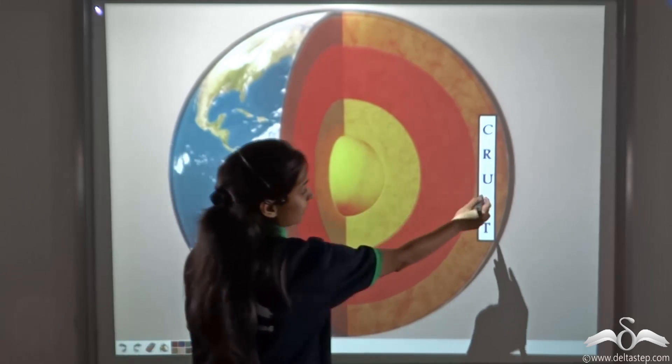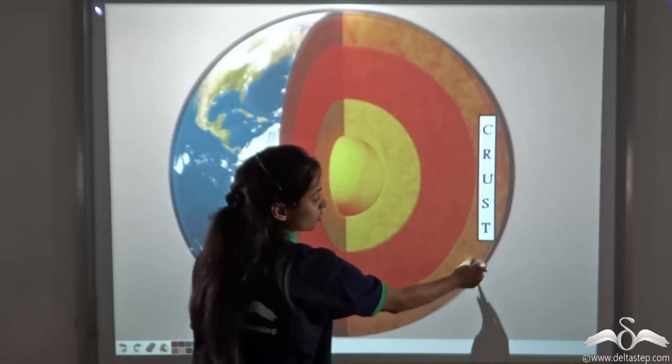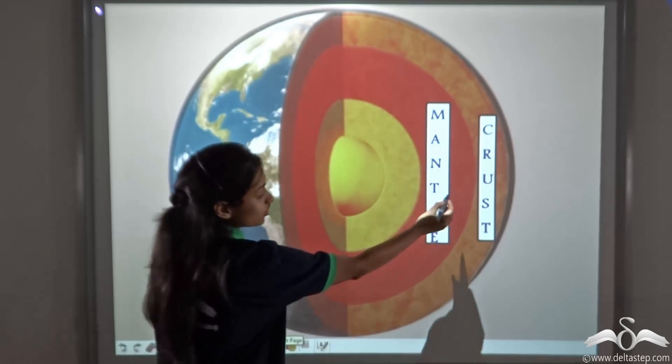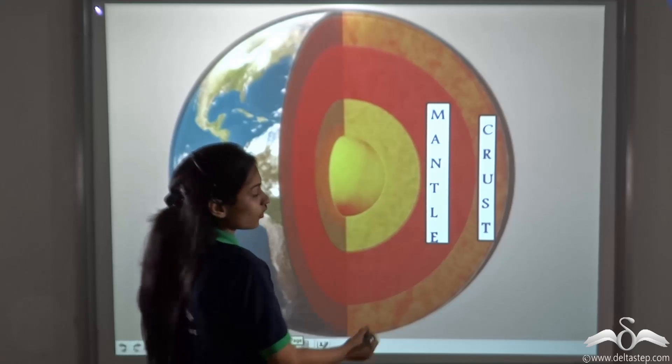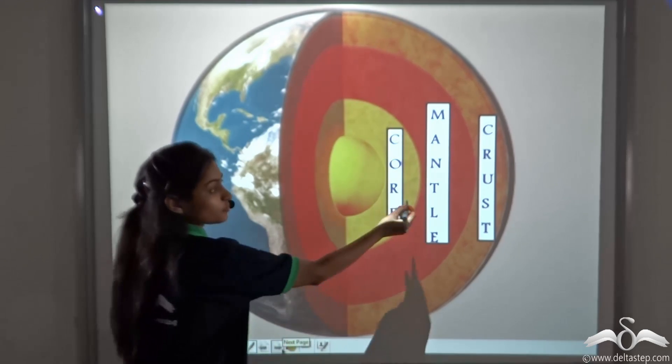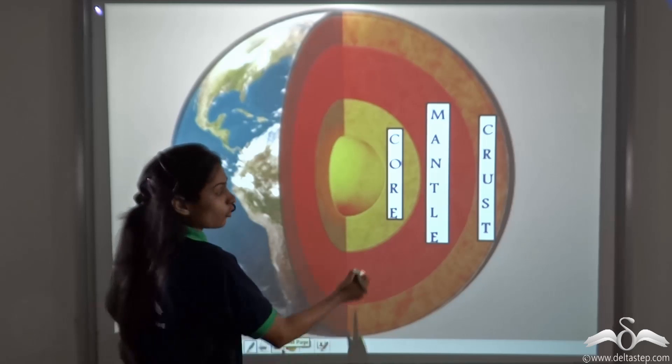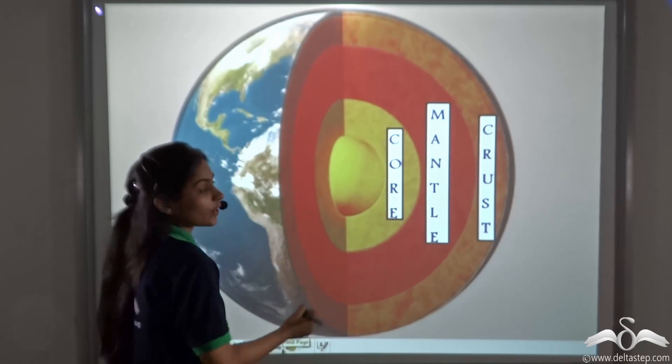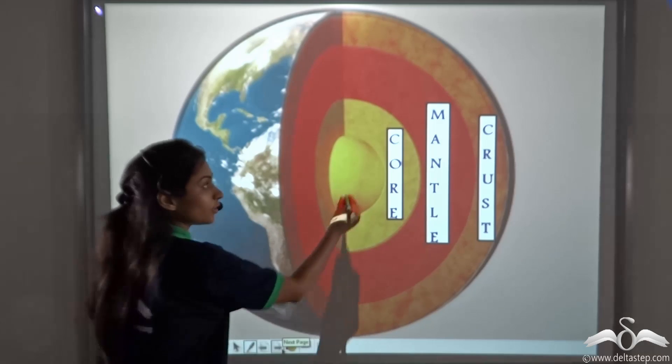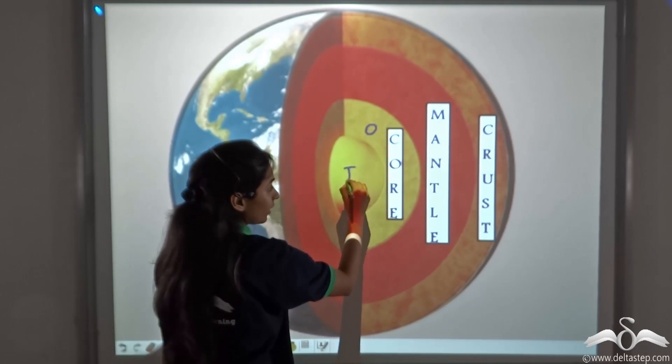Now the first layer, the outermost layer of the earth, is called the crust. Just below the crust, there is a layer called the mantle. And just below the mantle, there is a layer called the core of the earth. It is the central portion of the earth. It is further divided into outer core and inner core.